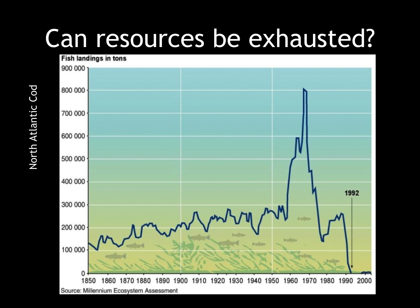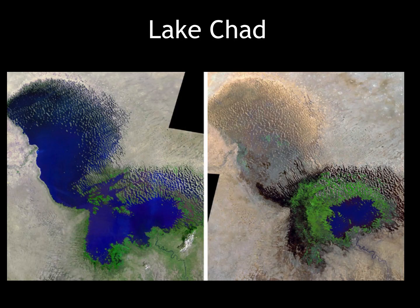After analyzing our growing human population, it is important to analyze the impacts this population can have on our world. Can resources be exhausted? This particular figure shows the North Atlantic cod population. We have overfished the population to such an extent that it is in severe danger of becoming extinct. This photo series shows water depletion in Lake Chad, which is located in Africa. Water resources are being depleted as tributaries are cut off from bodies of water and diverted for irrigation.